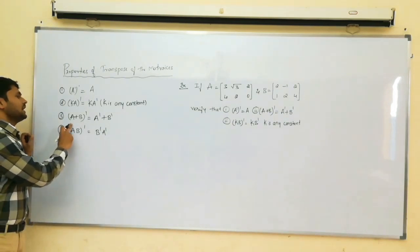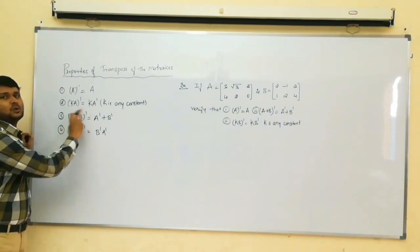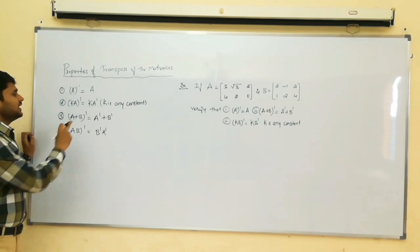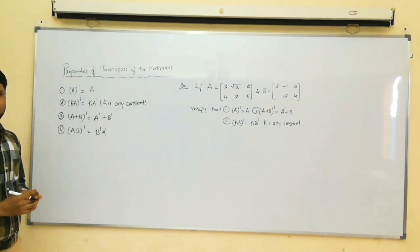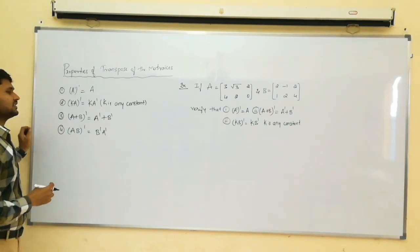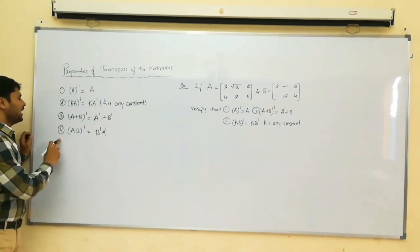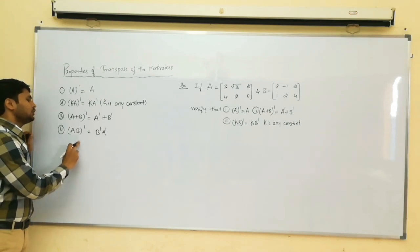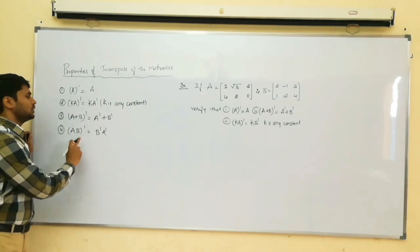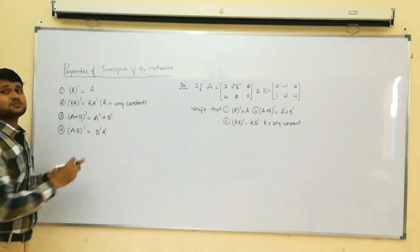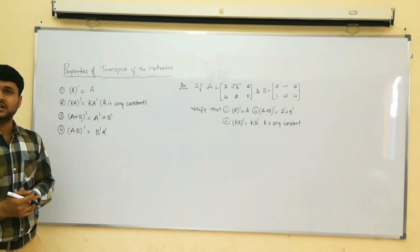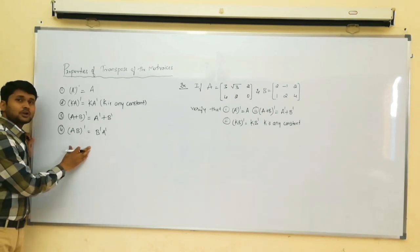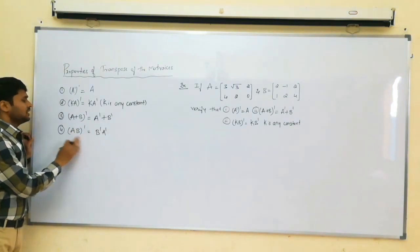Third property: A plus B, whole transpose, is equal to A transpose plus B transpose. Fourth property: A into B, whole transpose, is equal to B transpose into A transpose. This is one of the important properties we have to remember.